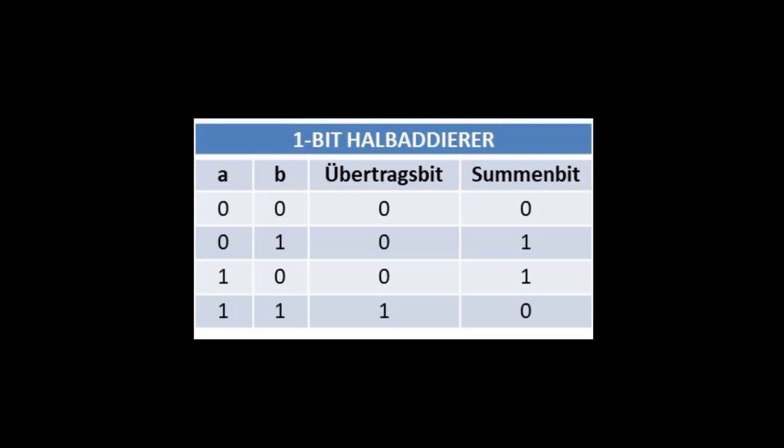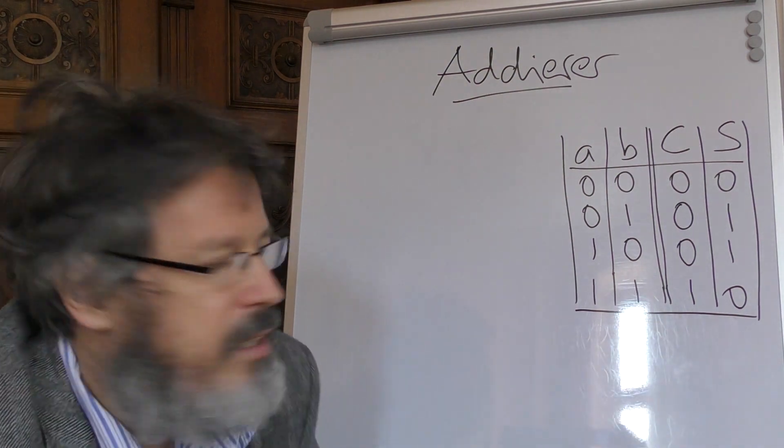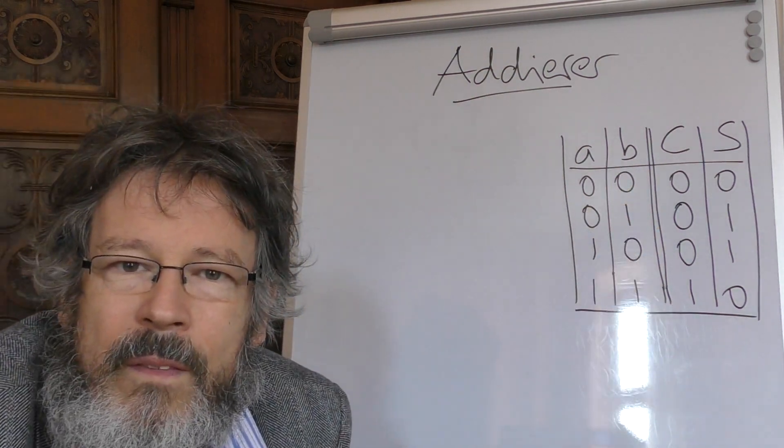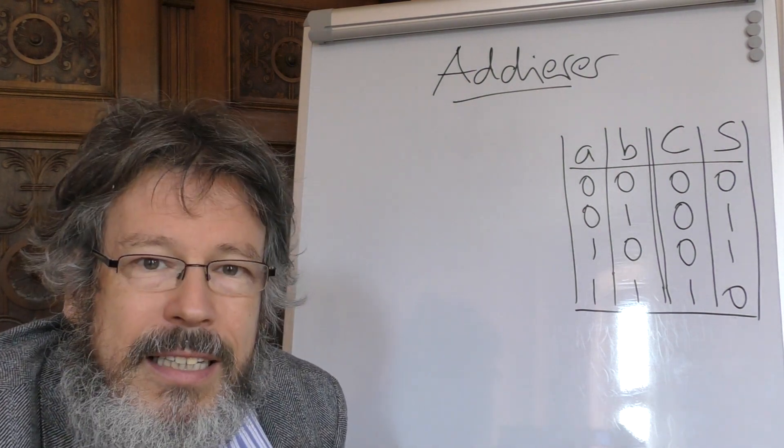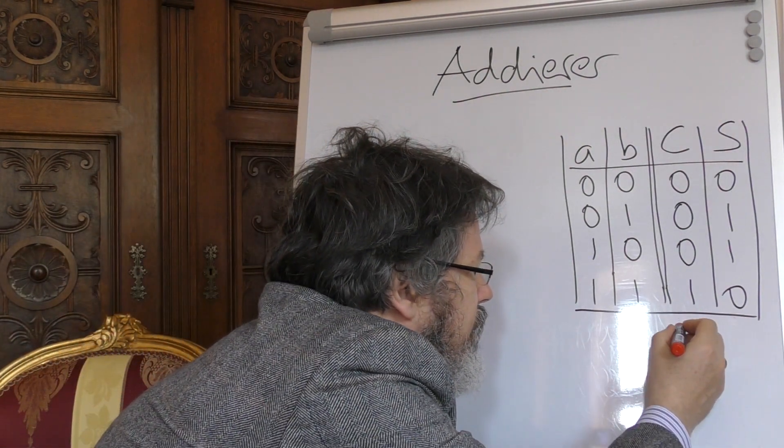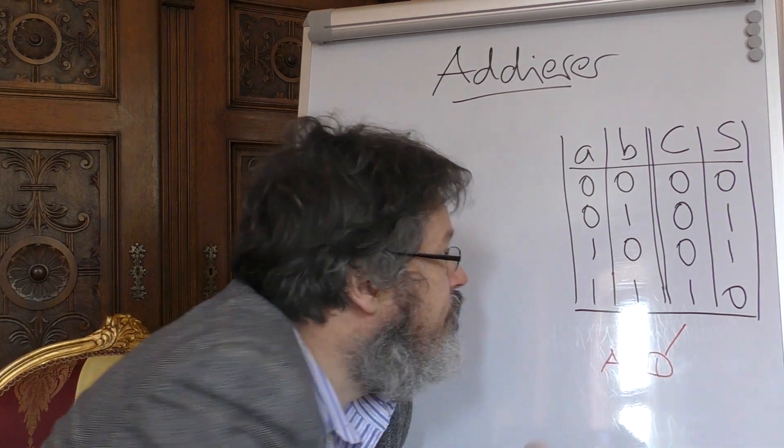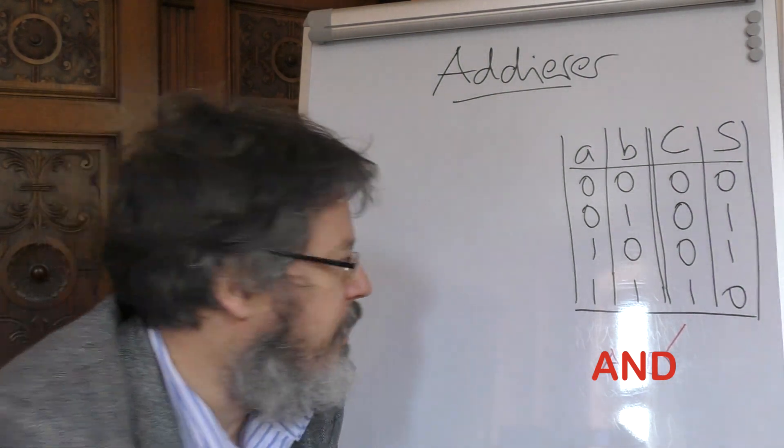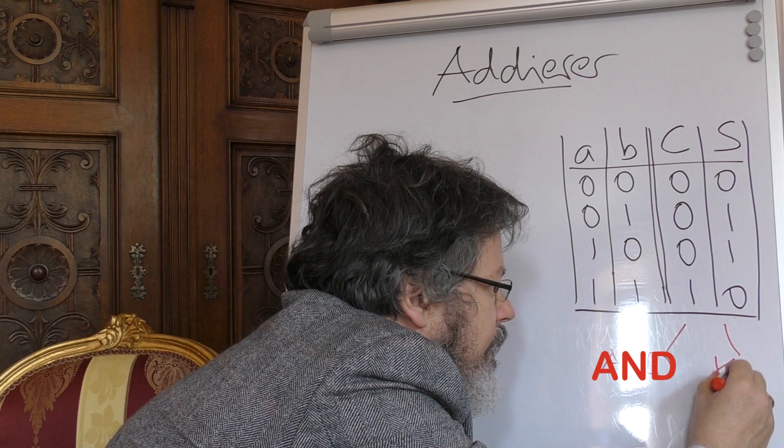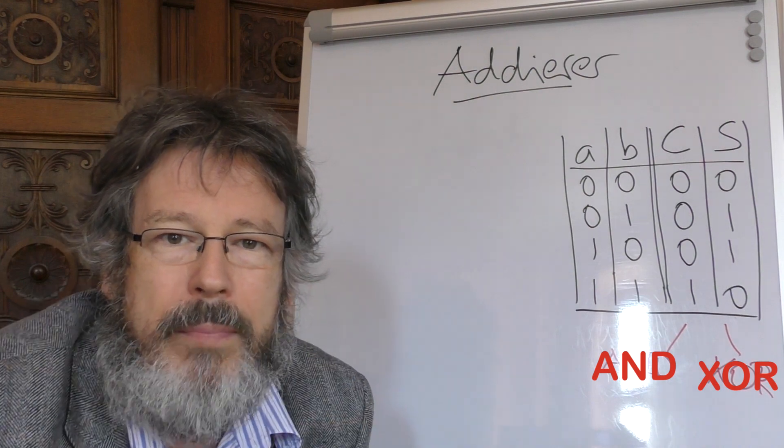Wenn wir uns diese Tabelle nun genauer anschauen, dann beobachten wir etwas Erstaunliches. Schauen Sie sich einmal das Carry-Bit an: 0, 0, 0, 1. Das kennen wir schon aus der Buhl'schen Algebra. Das ist nichts anderes als ein UND-Verknüpfungs-Operator. Und das Summen-Bit 0, 1, 1, 0. Das ist das XOR, das wir auch schon kennen. Exklusives Oder.